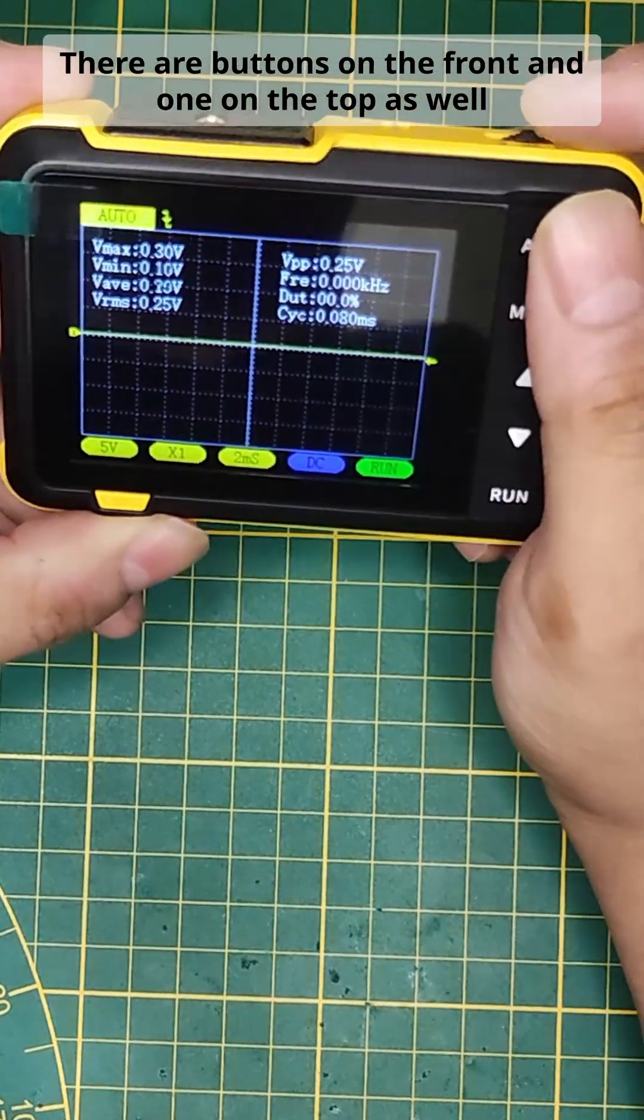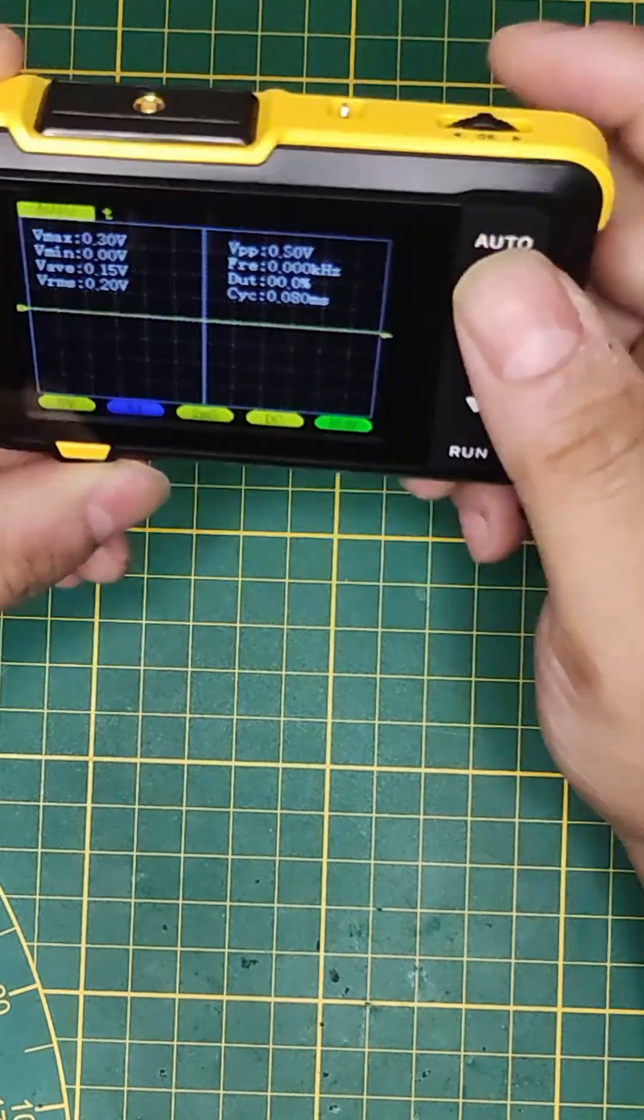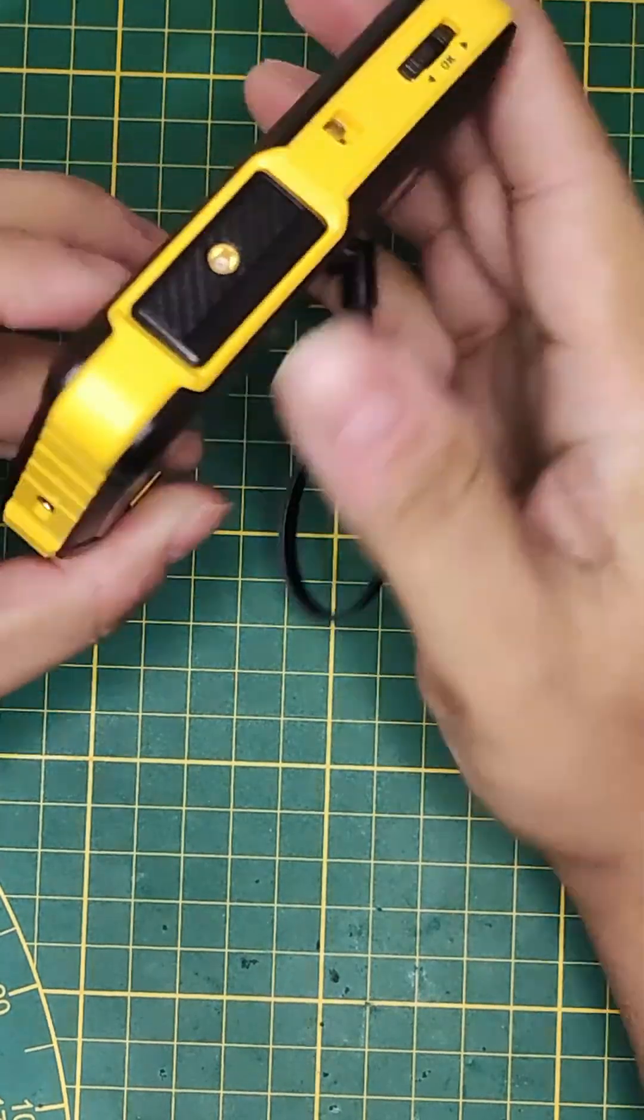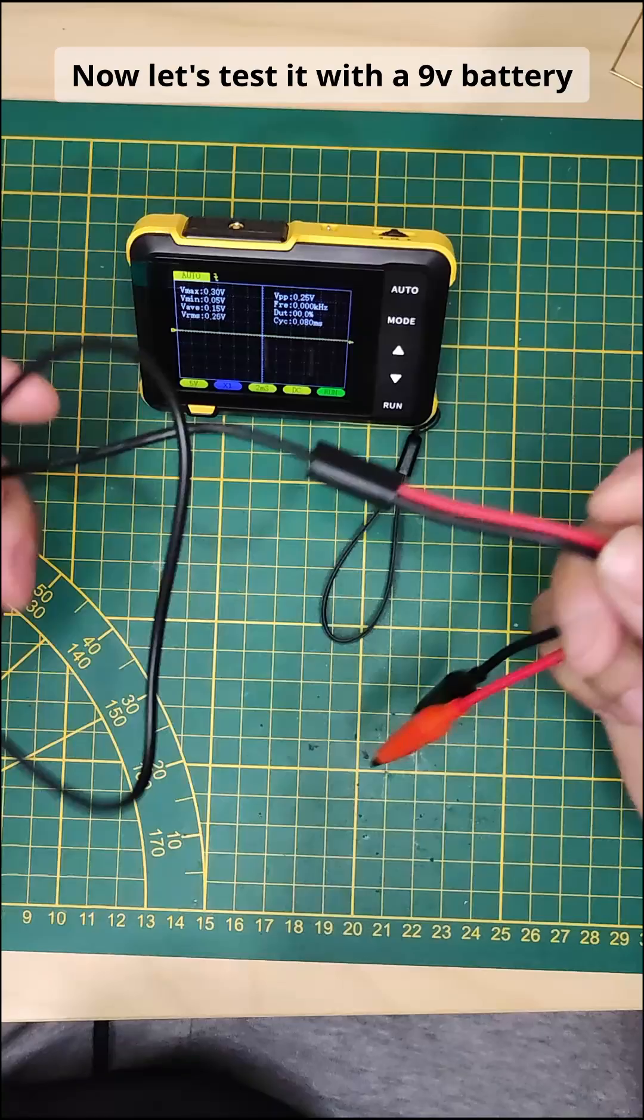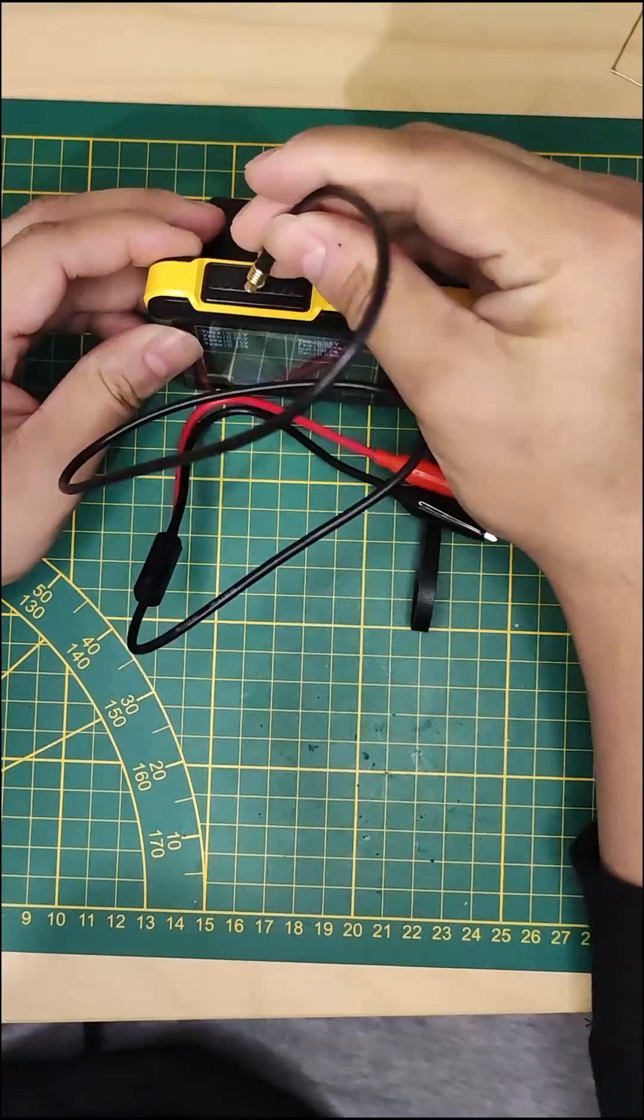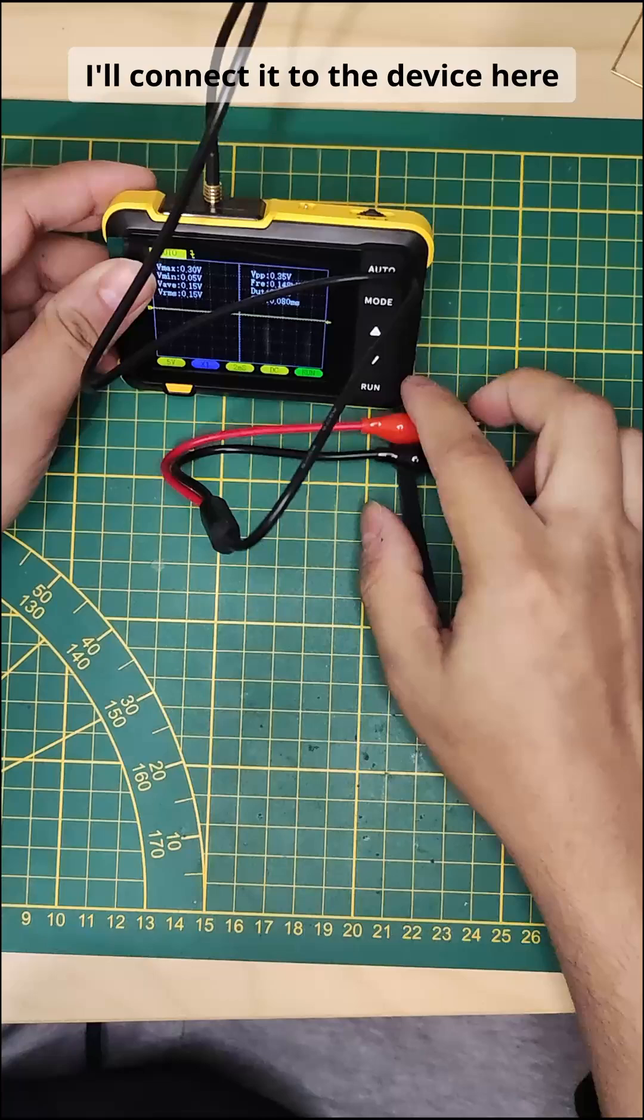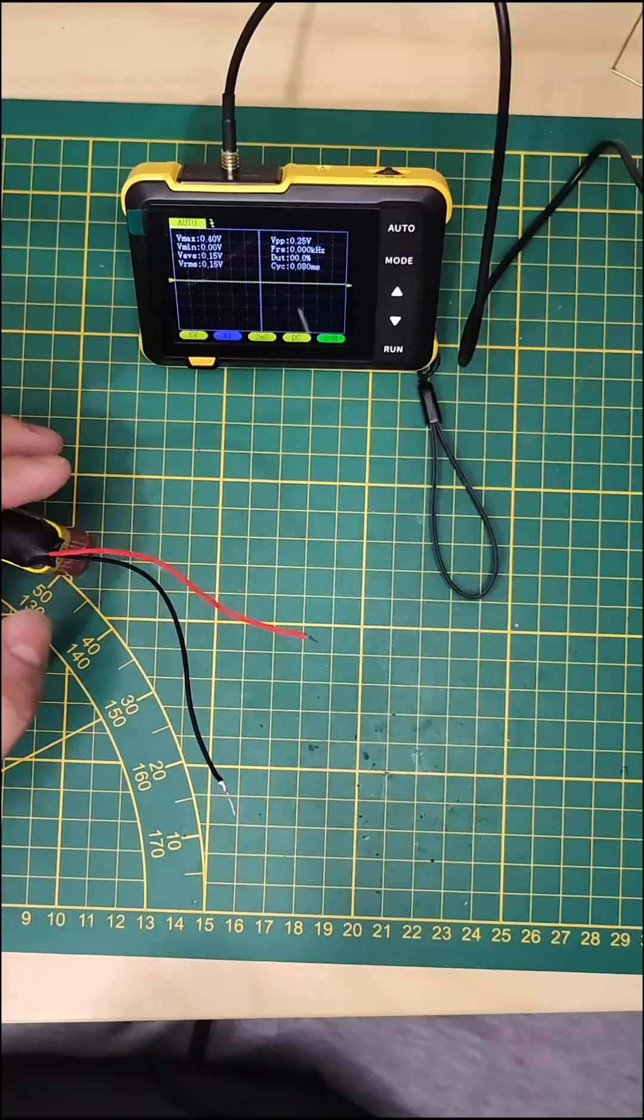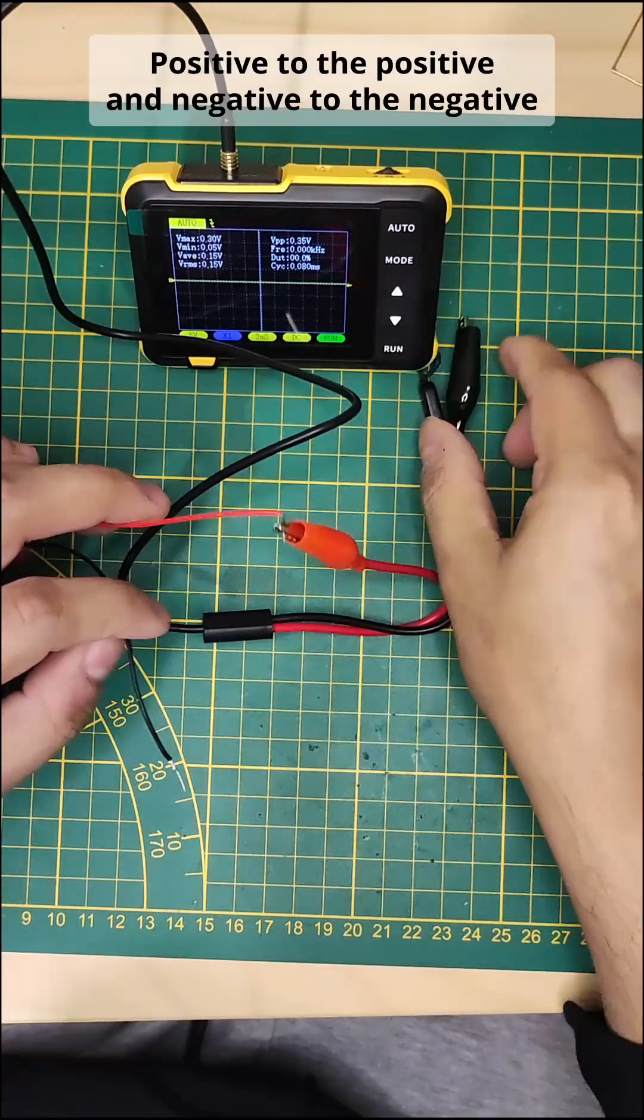Let's test it with a 9 volt battery. Here I have the wire with alligator clips. I'll connect it to the device. Let's connect the battery positive to the positive and negative to the negative.